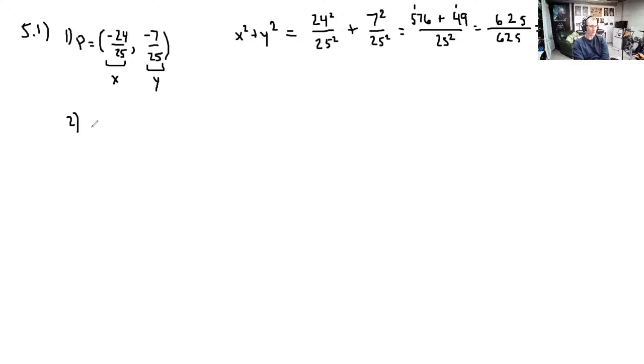Next question. It says P, a point, I'll have to write this one out. P is a point, and it is on the unit circle and has an x-coordinate equal to negative 3 over 5 and a negative y-coordinate. Find the y-coordinate.